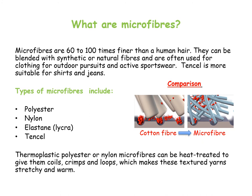Microfibres are very, very tiny — finer than human hair. They can be blended with synthetic or natural fibres and are often used for outdoor clothing. The reason they are blended is because they give added properties; for example, adding microfibres to polyester, nylon or Tencel will give them additional properties. If you look at the picture comparing a cotton fibre to a microfibre, you can see that a microfibre is able to absorb more and get into areas where a cotton fibre wouldn't, making them really good for cleaning cloths because they pick up dust and absorb more.